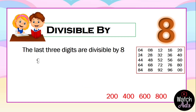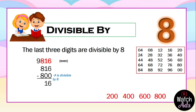Let's have another example: 9816. First we check if it is an even number — yes, it is. We take the last three digits, 816, and check the magic numbers. The largest that fits is 800: 816 minus 800 gives us 16, and 16 is divisible by 8.